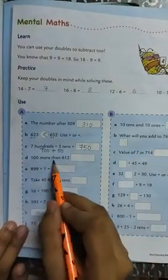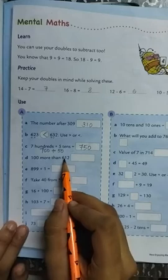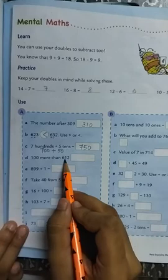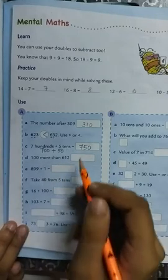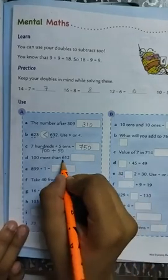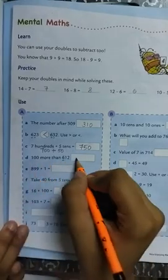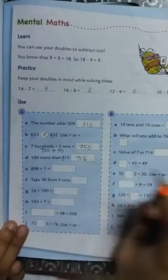Question D, 100 more than 612. Here we have to add 100. More means more. This means 612 plus 100 is 712. In the hundreds place, 612 in the hundreds place, add 1. The answer is 712.